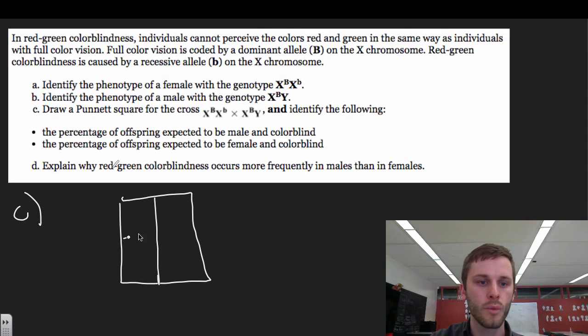And really we'll write this here. So the first person is X with a big B, X with a big B, and then X with a small B. So this is your female. And then we have the guy right here. We have X with a big B, and then Y. So for this sex-linked trait, you're only going to see this colorblind trait on the X chromosome.